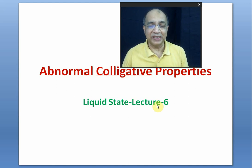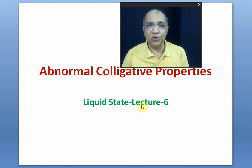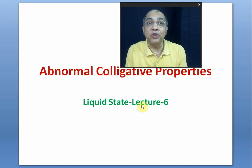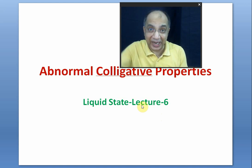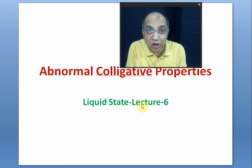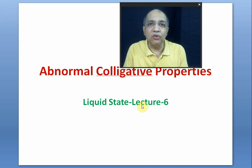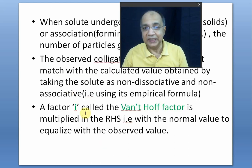Carboxylic acids remain as dimers in solution. In such cases it is called abnormal. Since colligative properties depend only on the number of particles, not on their nature or identity, now we will see: if the solute produces more particles due to ion formation, or fewer particles due to dimerization, trimerization, or association, how the observed colligative property can be found by calculation and how it will match with the observed value.